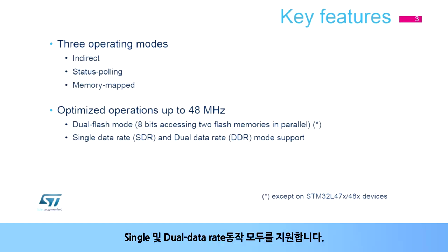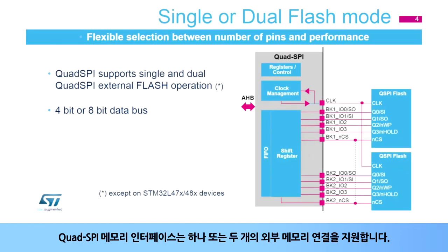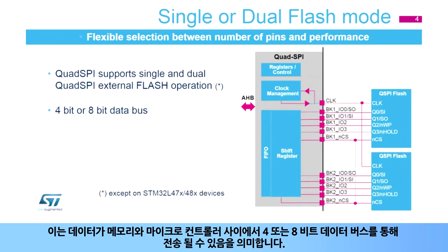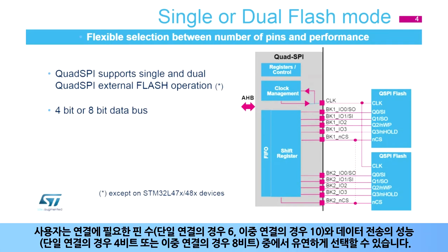It supports both single and dual data rate operation. The Quad SPI Memory Interface supports the connection of one or two external memories, meaning data can be transferred over a 4- or 8-bit data bus. This gives the user flexibility to choose between the number of pins required — 6 for a single and 10 for a double connection — and the performance: 4-bits for a single or 8-bits for a double connection.